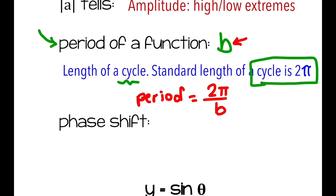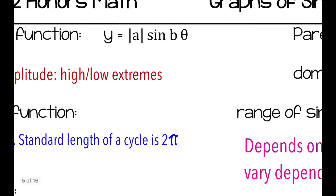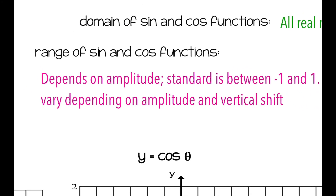We'll do some practice with that — it tells us how long to complete an entire cycle. The range is different from the domain. While the domain is all real numbers, the range will have a high and a low with sine and cosine functions, depending on the amplitude. The standard range for the parent function is between negative 1 and positive 1, but it can depend on the amplitude and if there's a vertical shift.